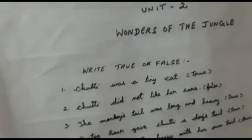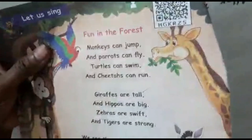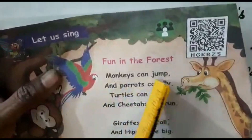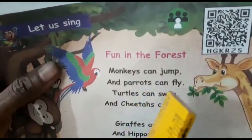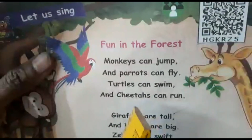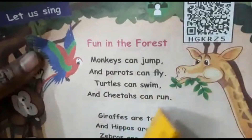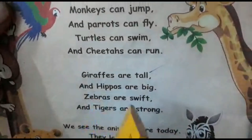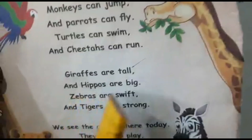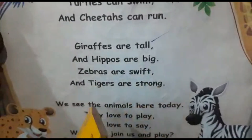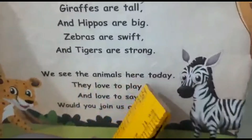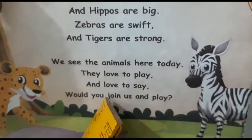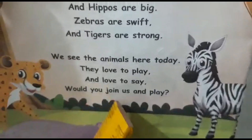Now we are going to see the poem, students: Fun in the Forest. Monkeys can jump and parrots can fly — so monkeys only jump, and parrots, birds always fly. Turtles can swim and titas can run. Giraffes are tall — giraffe is a very tall animal. And hippos are big. Zebras are swift and tigers are strong. We see the animals here today. They love to play and love to say, would you join us and play?